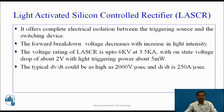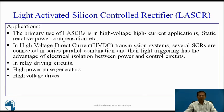The typical dv/dt could be as high as 2000 volts per microsecond. The primary use of LASCR is in high voltage, high current applications and static reactive power compensation. In high voltage direct current, that is HVDC transmission systems, several SCRs are connected in series-parallel combination, and their light triggering has the advantage of electrical isolation between the power and control circuit. Applications also include relay driving circuits, high power pulse generators, and high voltage drives.